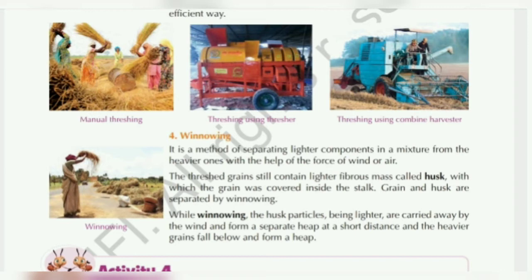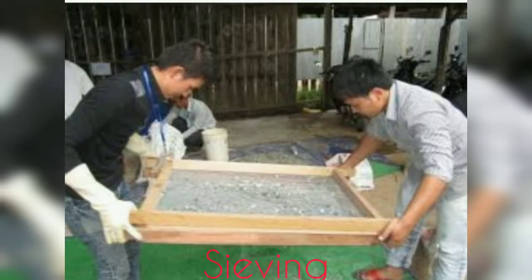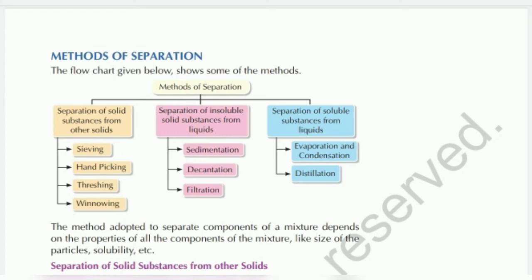So that is winnowing. Four methods we studied for separation of solid substances from other solids: first, hand-picking — done by hand; second, sieving — using a big net or fabricated net where larger substances stay on top and smaller ones fall through; third, threshing — beating stalks on a wooden piece to separate grains.